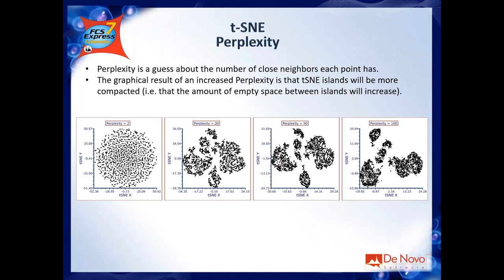Perplexity ranges between 2 and 100. tSNE is pretty robust in terms of perplexity, meaning it works well with a wide variety of values. Practically speaking, if you set perplexity between 30 and 100 you will see good results. The difference between different perplexity levels within this range is mainly how compact the islands appear.